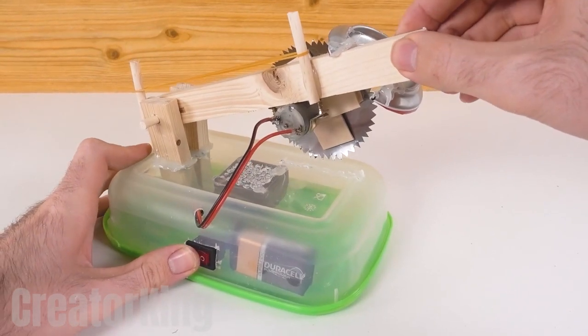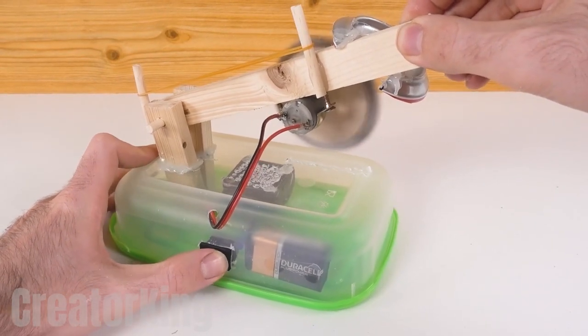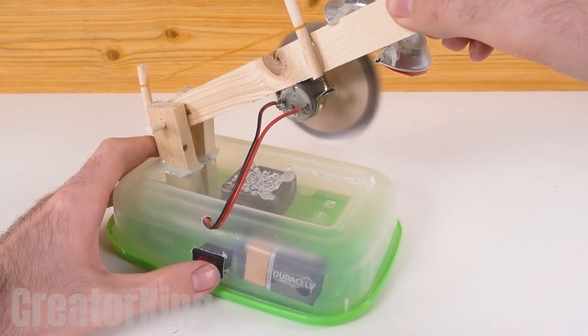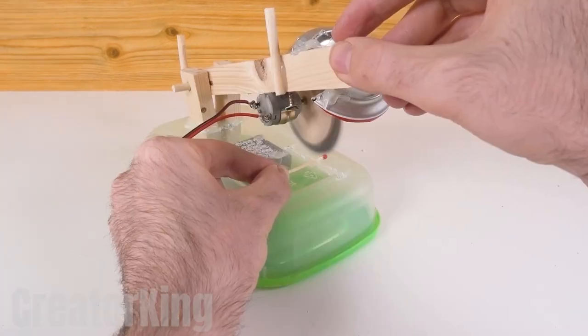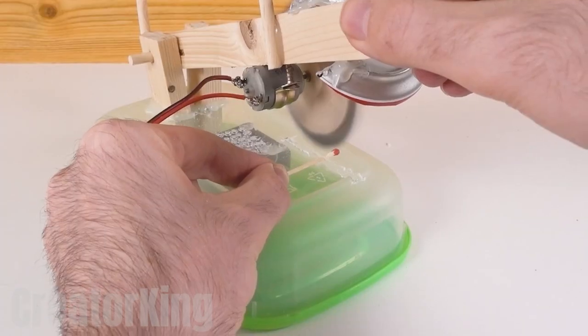Don't underestimate the aluminum can it's made of. It's fully capable of making you even more one-armed than you already are. To prove it to you, we'll chop off the head of a defenseless match. It cut it like butter!